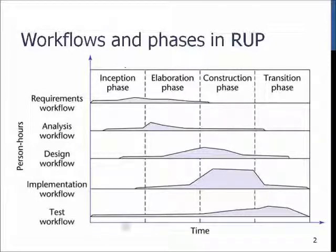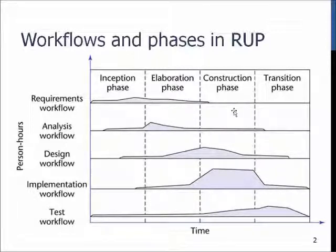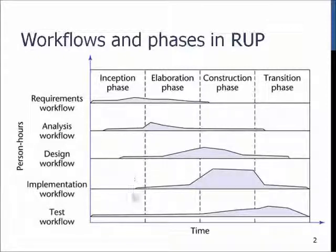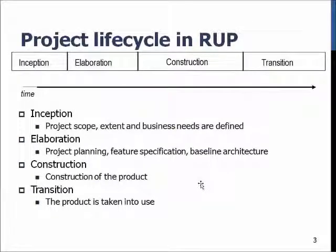Looking at the workflows and phases of Rational Unified Process, the elaboration phase, marked here, includes activities such as working with the requirements to fine-adjust and do requirements analysis, creating the first version of the software architecture in analysis and design workflows, and starting the implementation with setting up the environment and platforms and all other needed things. Finally, as we are doing software development, we also do some testing work, since we have to test our systems and platforms in the implementation tasks.